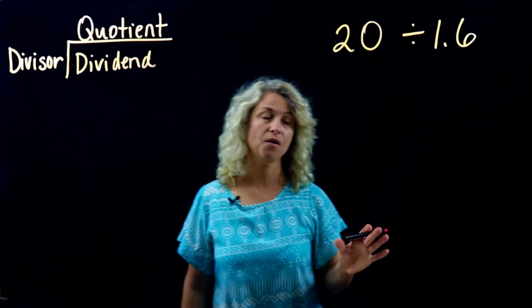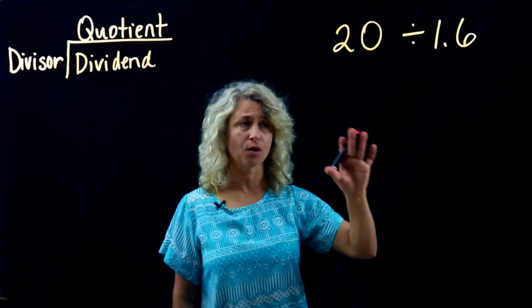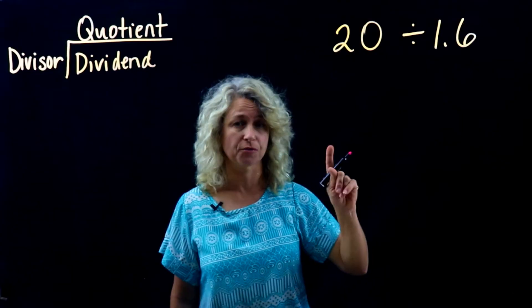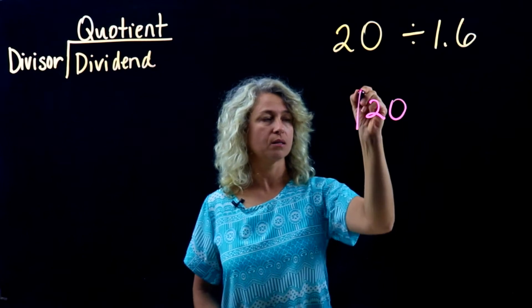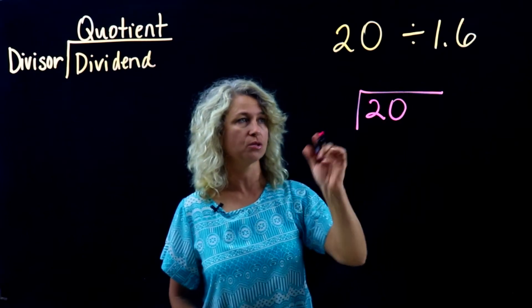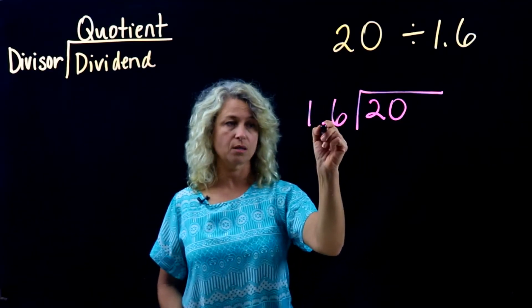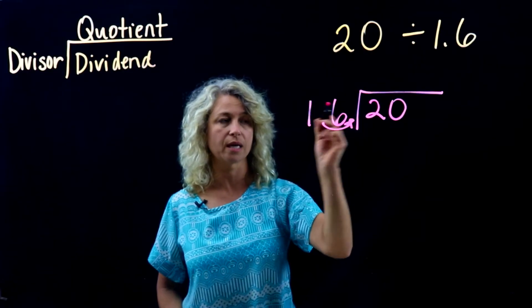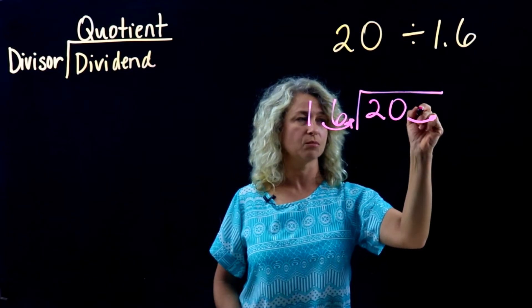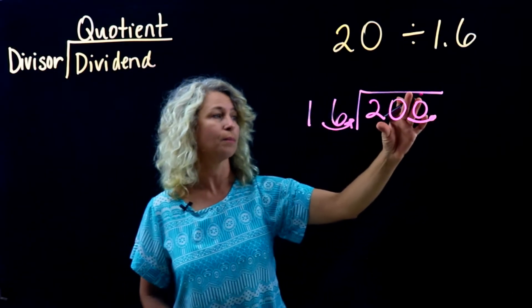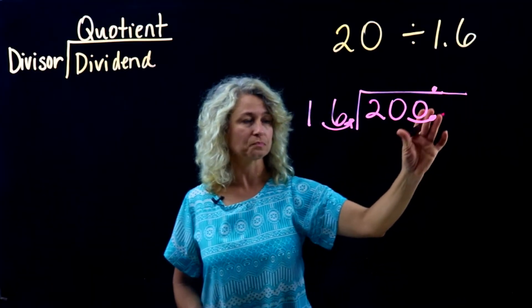Now I have one more example I want to show you. For the last example, this one is going to work very similar to the last one but there's a slightly different situation at the end. Let's write twenty inside the house, that's your dividend. One point six as the divisor. Remember, we want this to be a whole number so we want this to become sixteen and here's our decimal. So let's do the same in the dividend and move the decimal over one place, adding a zero to fill in the empty spot. Bring your decimal straight up.